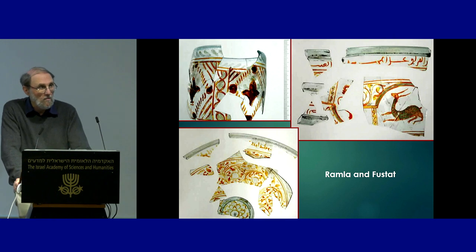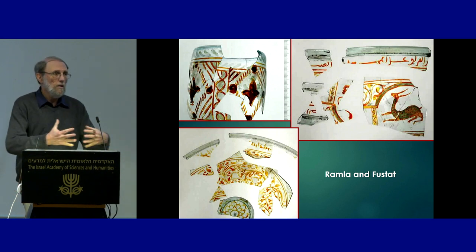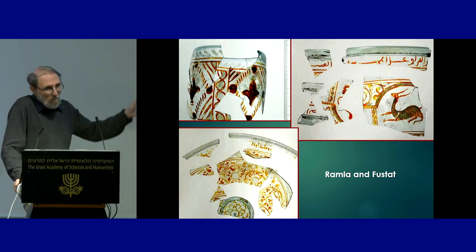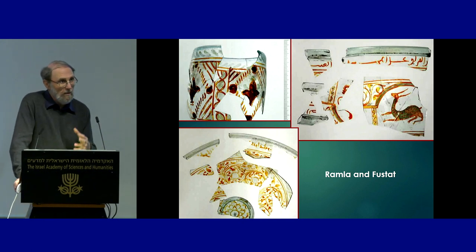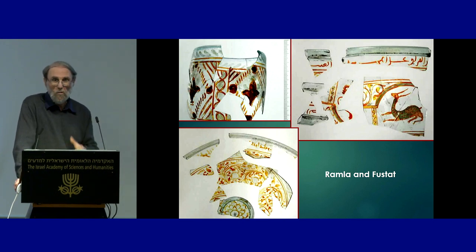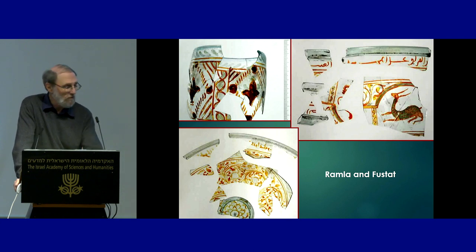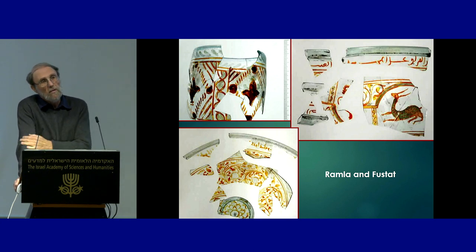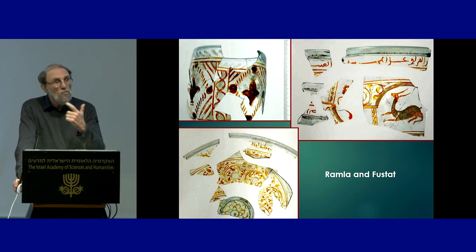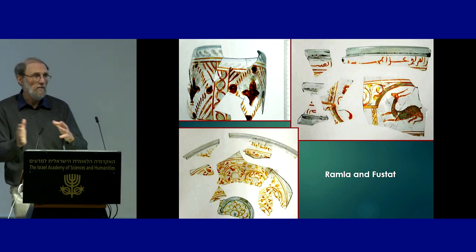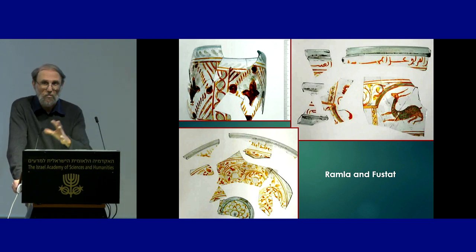A hint in favor of migrations comes from several aspects of material culture that lead to a very close connection with Egypt, particularly Fustat. One example is the glass lustre ware originating in Egypt, found in not large quantities — it's quite rare to find this type of decorated glass — but found in quantities in Ramle. We have other evidence suggesting a component of newcomers in the population of Ramle, which existed as a multicultural, multi-religious city, with evidence of Christians, a Jewish section, and so on.